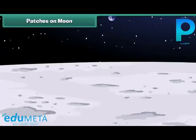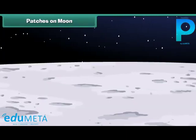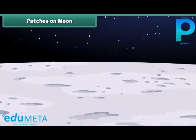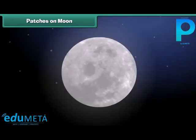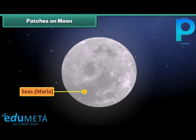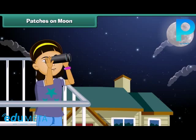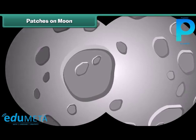Even though there is no liquid water on the moon, it has many interesting features such as craters, mountains, and lava plains. The dark patches on the moon's surface are plains called seas or Maria. They were called Maria because early astronomers thought these areas were great seas. The lighter patches are mountains, and you can use a pair of binoculars on a clear night to see the craters formed by ancient meteor collisions.